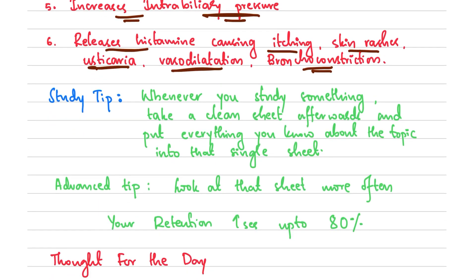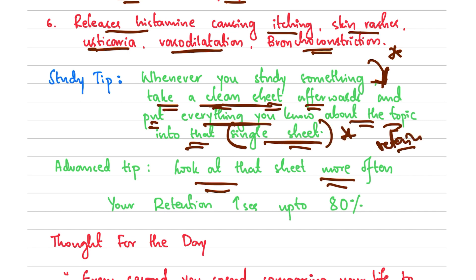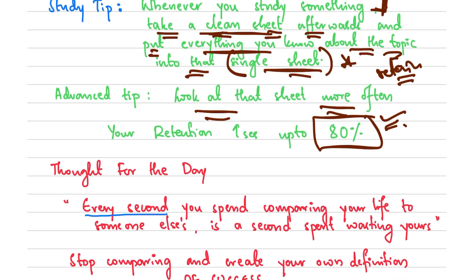Study tip: Whenever you study something, take a clean sheet of paper afterwards and write down everything you can remember about the topic. Keep looking at that sheet whenever you are free — while drinking tea or any other time. This helps retain information much longer, with retention likely up to 80 percent.